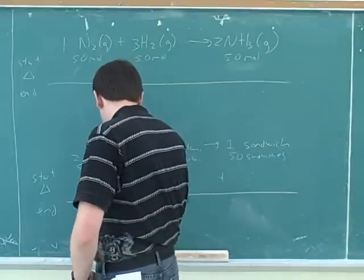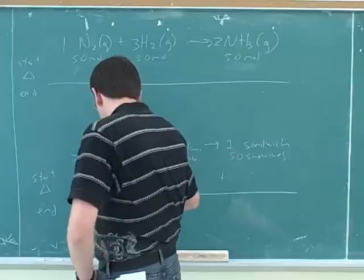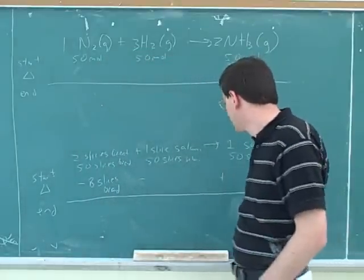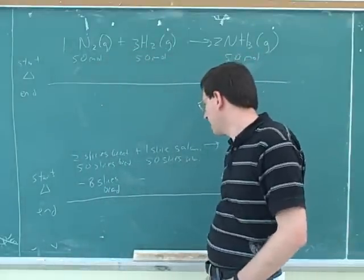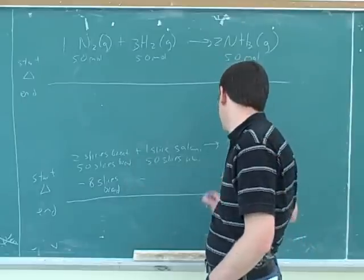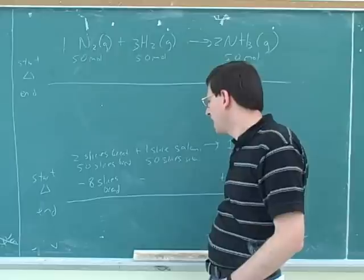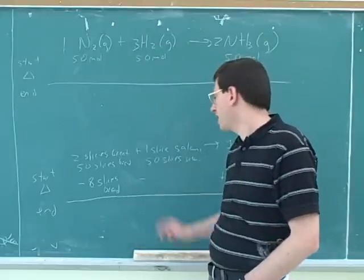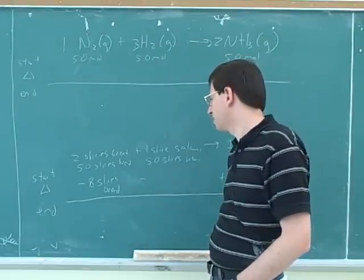These are supposed to be separate columns. So generally everything on the left will have the same sign, and that will be opposite to the sign on the right. Now if I'm using up eight slices of bread, how many slices of salami am I going to use up?